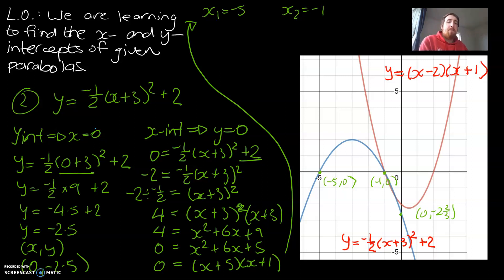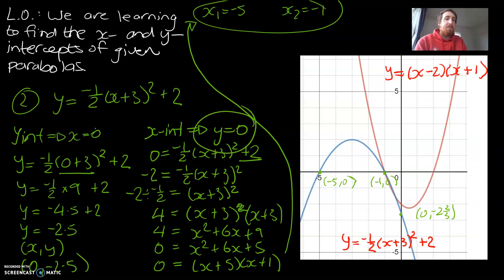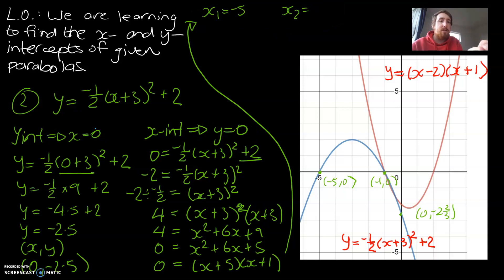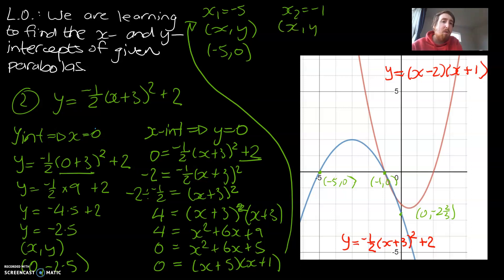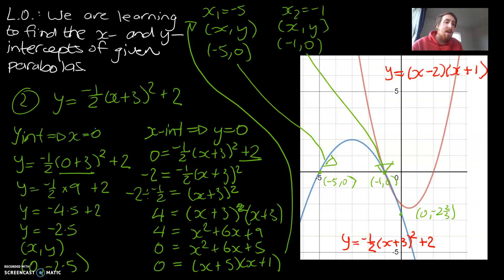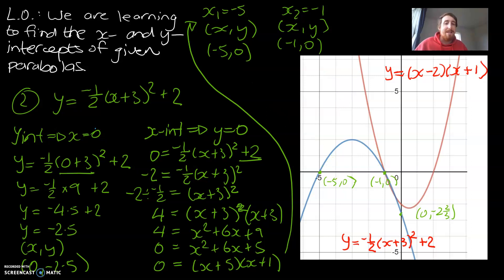We've split that up and solved each equation separately, so we've got enough information for our coordinates. The first answer: x comma y is negative 5 comma 0. The second answer: x comma y is negative 1 comma 0. If we reconcile that with what we observed, we've got both answers correct. We've now mathematically proved and verified those x-intercepts.